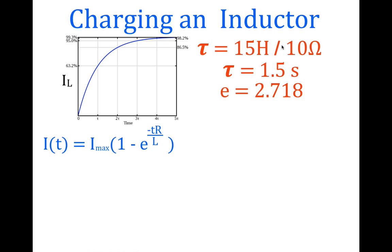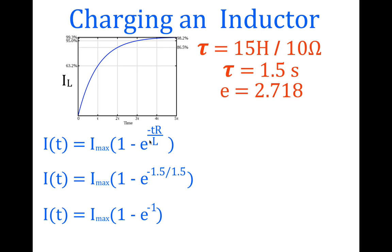Using our example of 15 Henrys and 10 Ohms, which gives a time constant of 1.5 seconds, and e equals 2.718. For one time constant, the time is 1.5 seconds divided by the time constant of 1.5, giving us e raised to the power of minus 1. Calculating 1 minus e to the minus 1 gives 0.632, or 63.2% of the eventual maximum current.